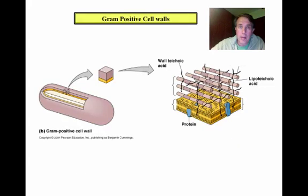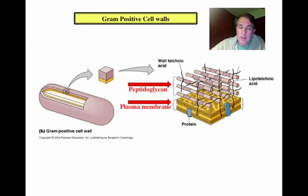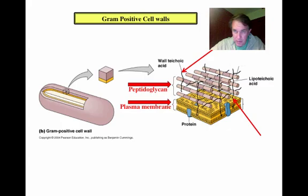The first type we encounter is the Gram-positive cell wall. Gram-positive bacteria have a thick layer of peptidoglycan, which can be seen in the diagram with alternating NAMs and NAGs. It's outside the plasma or cell membrane shown here. In addition to that peptidoglycan, the cell wall of Gram-positive bacteria may also contain what are known as teichoic acids, which serve to anchor the layers together and anchor them to the plasma membrane, indicated here with the red arrows. So the Gram-positive cell wall is pretty simple: a thick peptidoglycan layer anchored with teichoic acids.